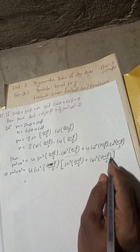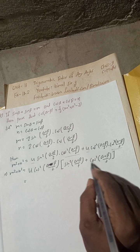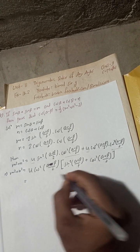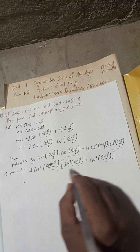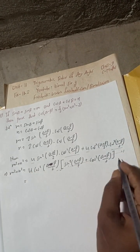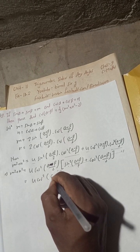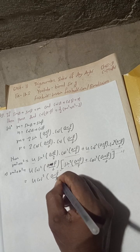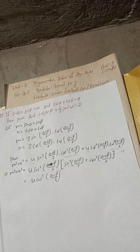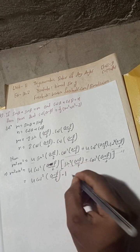But sin squared A plus cos squared A is equal to 1 — this is the Pythagorean identity. So sin squared((α plus β)/2) plus cos squared((α plus β)/2) equals 1. Therefore M squared plus N squared equals 4 cos squared((α minus β)/2) into 1, which gives us M squared plus N squared equals 4 cos squared((α minus β)/2).